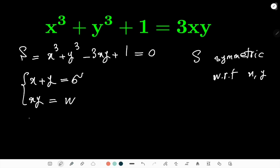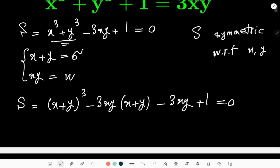And as a result I can write S to be, first of all we use cubic identity to simplify that, then I can write it (x + y)³ - 3xy(x + y) and then I have another -3xy + 1, this is equal to 0. And I'm just going to replace x + y with σ and xy with w.